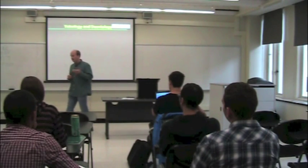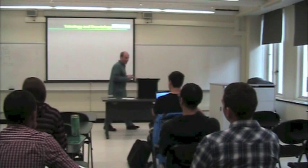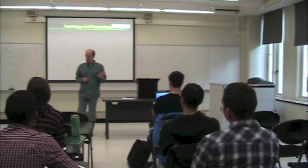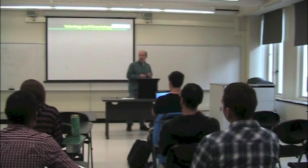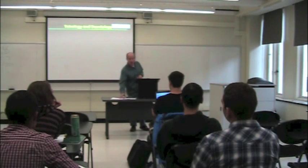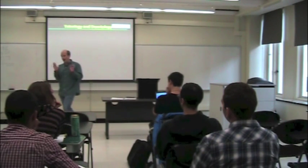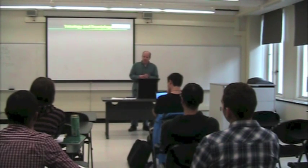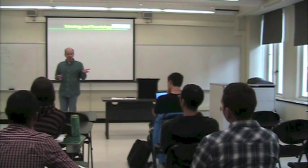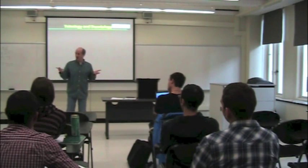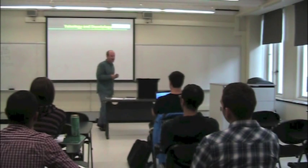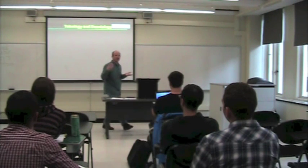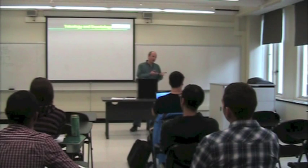The force of this objection is to bring out that utilitarianism has an account of what's good and what's valuable that does not depend on any prior moral assessment. Because utilitarianism first identifies what's good without making moral assessments, and then says that morality is about promoting that premoral or non-moral good, it can't make prior judgments about which desires count and which don't. It can't say that racist desires don't count because they're immoral, while other desires do count — because it doesn't have a moral theory available until after it has identified what's good.